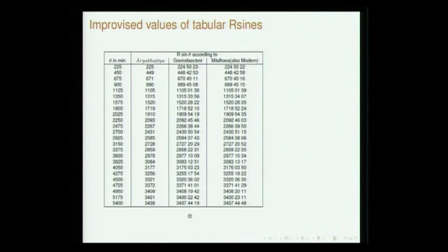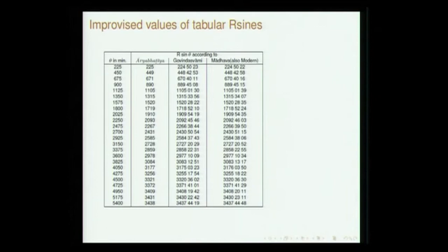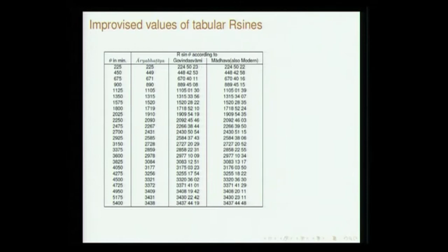What is interesting to note is that these values given by Govinda Swami are very close to the values given by Madhava, who obtained the infinite series and then gave the accurate values. Once you have the infinite series, you can get very accurate values depending on the number of terms considered — it is a fast-converging series. But even without that, Govinda Swami was able to get close values, indicating how meticulously they were trying to improve sine values. Govinda Swami is in the 9th century, Madhava is in the 14th century, and Aryabhata in the 5th century — there has been a continuous effort to improve these values.